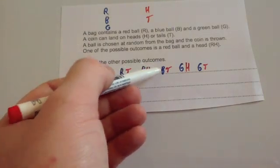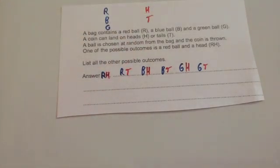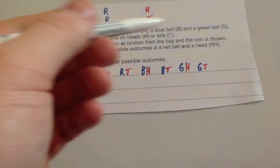So altogether there's one, two, three, four, five, six different possible outcomes. And then probably the next part of the question probably would ask you a probability question based on this.